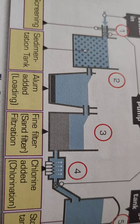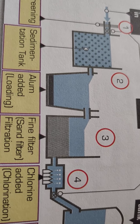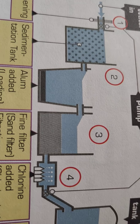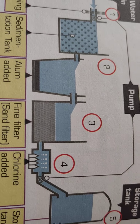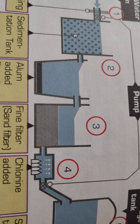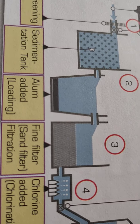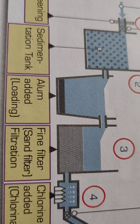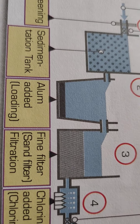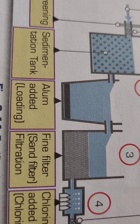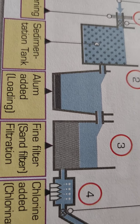Now, what is the loading tank? There are some impurities that are bigger in size and settle down on standing, but there are some impurities that are smaller in size and do not settle. To make them settle, we add an external compound — like alum. Alum increases the size of the impurity and helps it to settle down. This process is known as loading — when you have a small impurity and you need to help it settle and sediment.